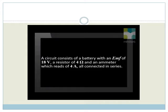A circuit consists of a battery with an EMF of 18 volts, a resistor of 4 ohms, and an ammeter which reads 4 amperes all connected in series.